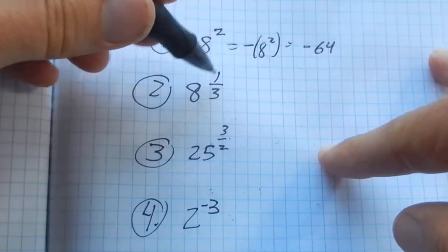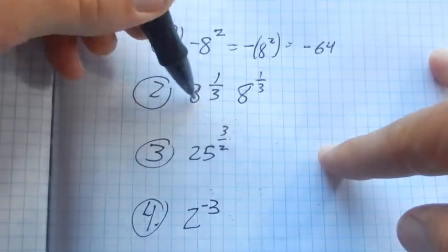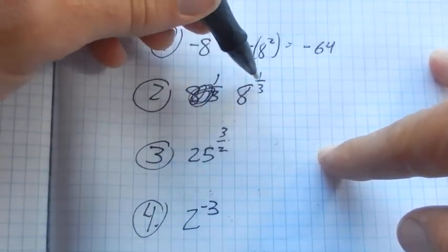The next one, 8 to the 1/3 power. It's written a little sloppily. You know, it should be like that, right? That 1/3 should be superscript. I was sloppy.